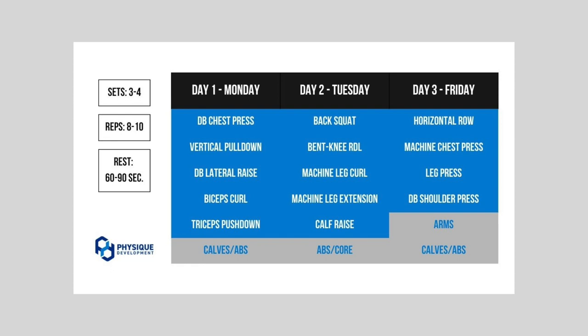Putting that all together, just like version one, the same sets and reps apply: three to four challenging sets in the eight to ten rep range, with 60 to 90 seconds rest between sets and exercises is a great place to start. You can progress things or pull things back depending on your performance and recovery throughout each session. Keeping a training logbook can certainly help — I'll link a video on that in the upper right-hand corner.